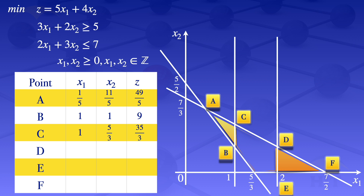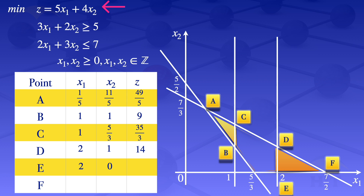At point E, x1 equals 2 and x2 equals 0. Substituting into the objective function gives z equals 10. At point F, x1 equals 7 over 2 and x2 equals 0. Substituting gives z equals 35 divided by 2.